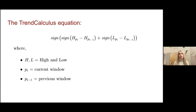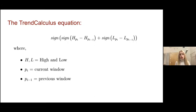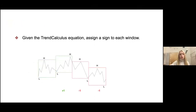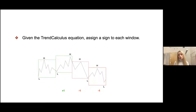The next step is to assign a value for each window using the trend calculus equations. Given this equation, we assign a sign to each window: plus one for rising windows — for example the second one — and minus one for falling windows, for example the third and fourth.